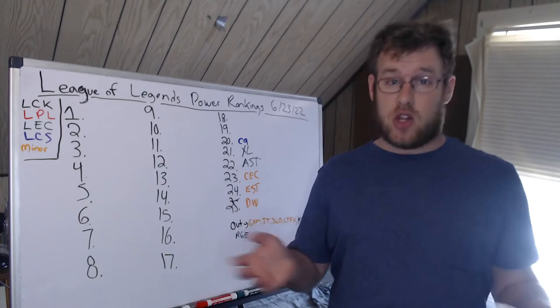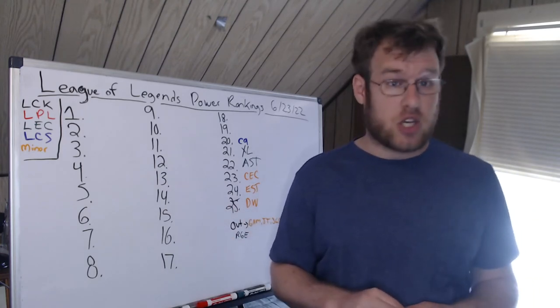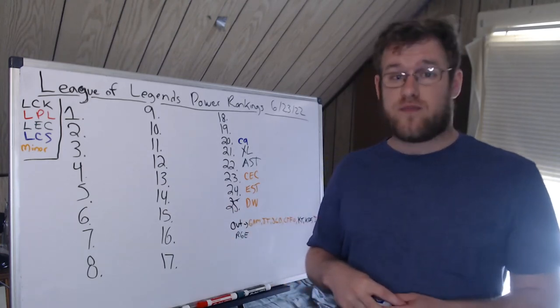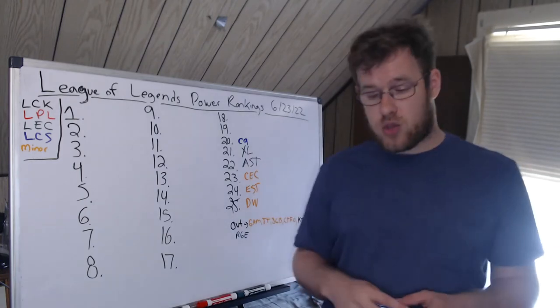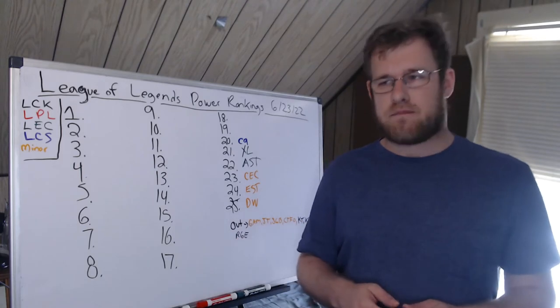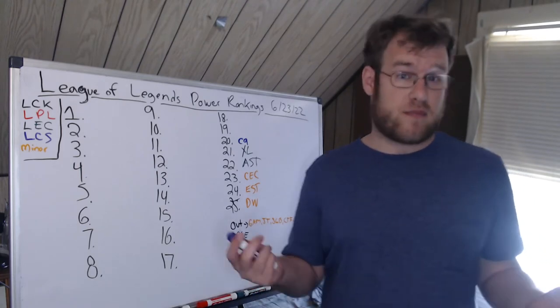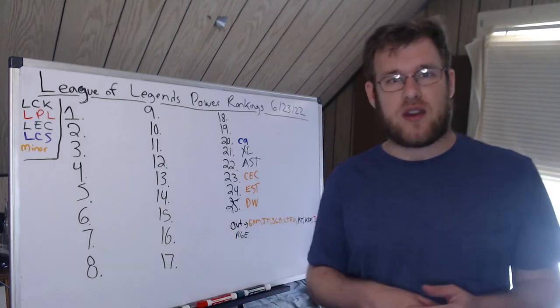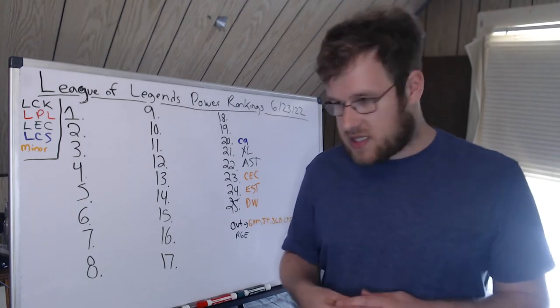For them to lose to them with an academy bot lane is whatever. Fudge has looked okay, Blaber looked really good at times, Jensen looks like he didn't miss a beat. C9 I have 20th, and I think this is like the lowest they'll be because they're going to have their bot lane, Berserker and Zven, eventually here.